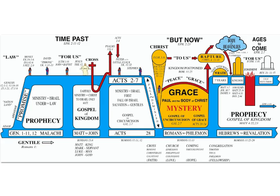God dispensing certain commands or programs during specific time periods to a specific group of people for a certain and specific reason — these are called dispensations of time, or Bible dispensations. One thing I'd like to add is the fact that all false religions and denominations have one thing in common: they ignore the divisions of time. They ignore the different time periods of how God dealt with people uniquely. By ignoring these time periods, they compile the entire Bible into one big book of confusion.